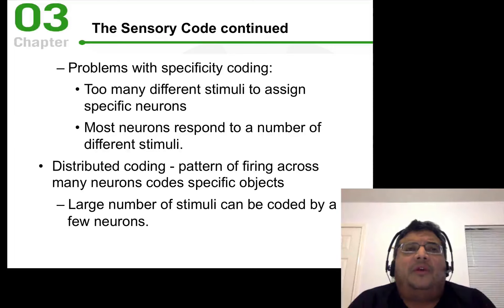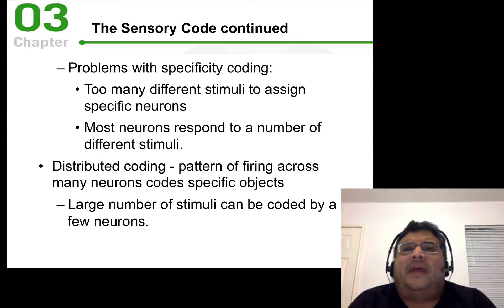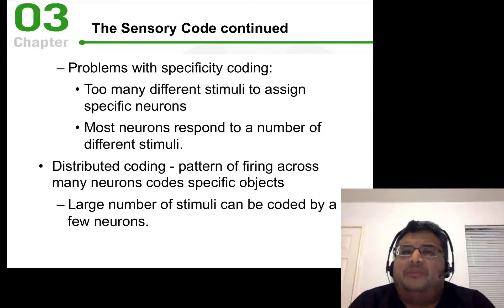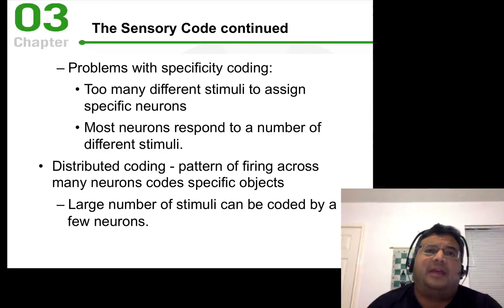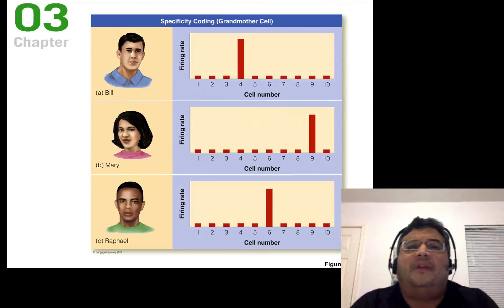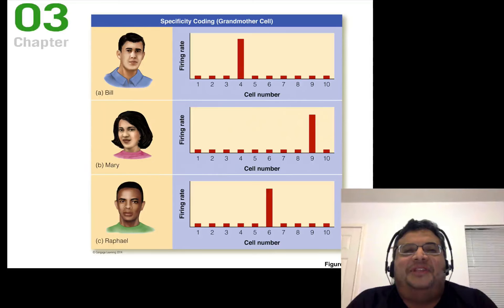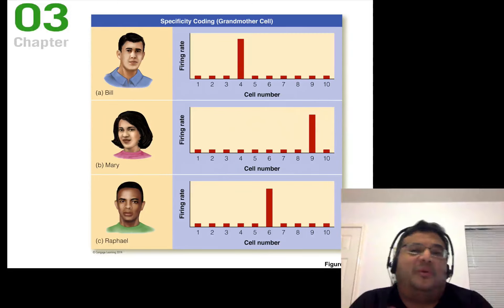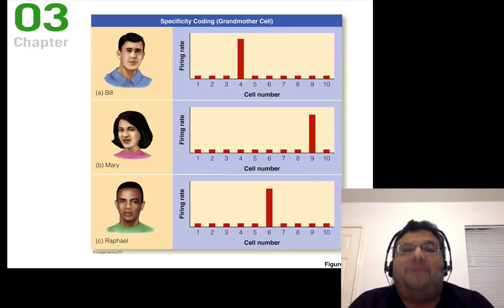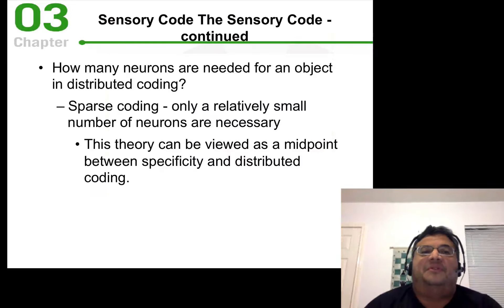This distributed firing would allow many different stimuli to be encoded by only a few neurons. For example, with just ten neurons firing in different patterns — one, two, three neurons on and off — you could make a very large number of combinations. Multiply that by billions and you can see how our brains encode experience. So rather than one grandmother cell, you might have a cell that recognizes all firing patterns associated with seeing Bill, and another for Mary.